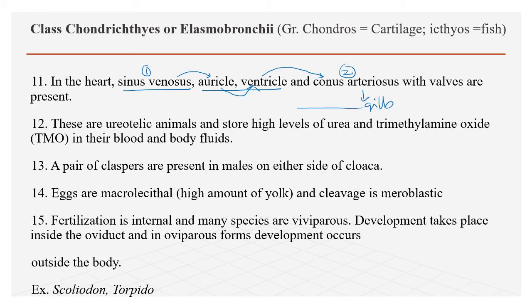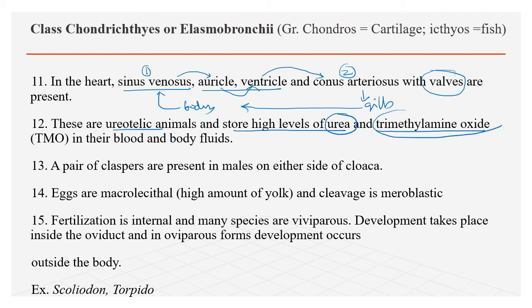From the gills, blood is supplied to the entire body, and from the body parts blood is collected back to the sinus venosus. All these chambers have walls that prevent the backward flow of blood. These fishes are ureotelic — they excrete urea and also store some amount of urea inside the body to maintain isotonic physiological conditions.